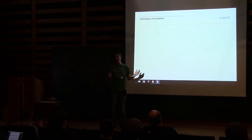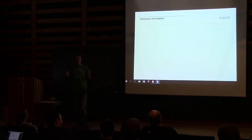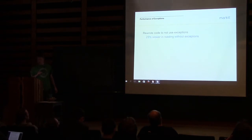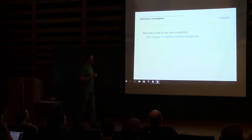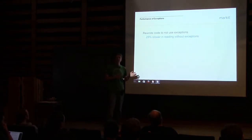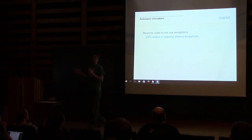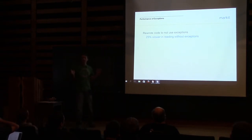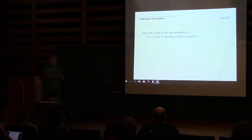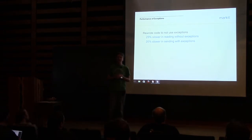I took two real applications implemented with exceptions and re-implemented them without exceptions, reporting errors through more traditional means — either returning error codes or returning an optional, whichever was appropriate. The results: the error-code version was 25% slower for reading. The error-code version processed about 1.05 million messages per second, whereas the exception-based version processed 1.3 million messages per second. That was a big improvement. But then the sending side was slower with exceptions — about 20% overhead.